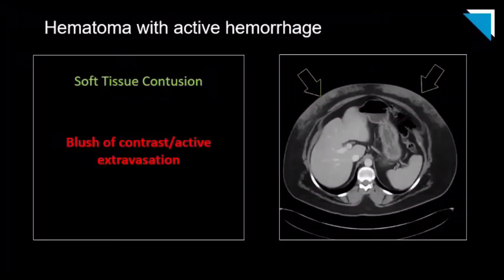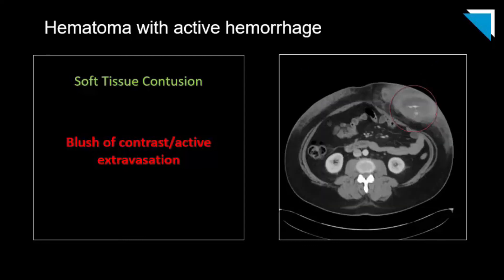In this trauma patient with a history of crushing injury, we see extensive subcutaneous soft tissue contusion. As we move further down, we see a focus of contrast density in the subcutaneous soft tissues compatible with active hemorrhage. The density matches the arterial phase, so this is likely an arterial hemorrhage — and this looks basically the same as it does anywhere else in the body.